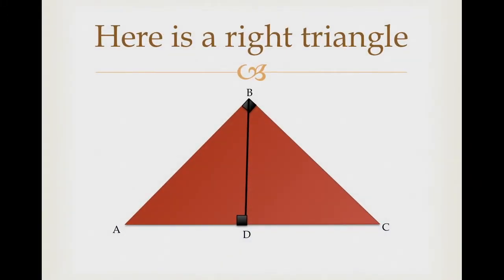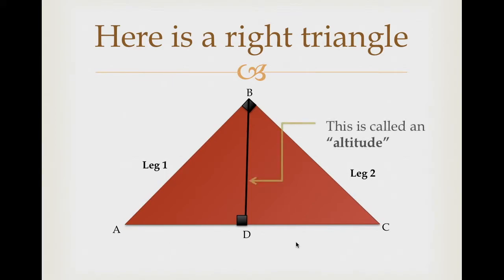Here is a right triangle — you can tell because you have the squares here, so this means that triangle ABC is a right triangle. Remember that even when you're using Pythagorean's theorem, you have legs. This is one leg and this is the other leg. We'll call this the hypotenuse.